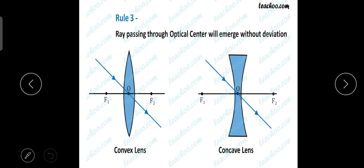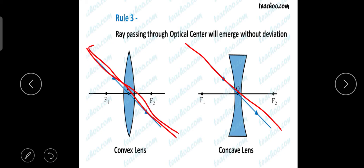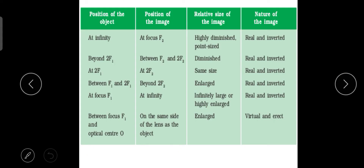The third rule: a ray passing through the optical center will emerge without deviation. When a light ray passes through the optical center of a concave or convex lens, it emerges without any deviation — the light ray passes straight through the center. These are the three rules we use to draw ray diagrams and analyze image formation with the object at different positions.